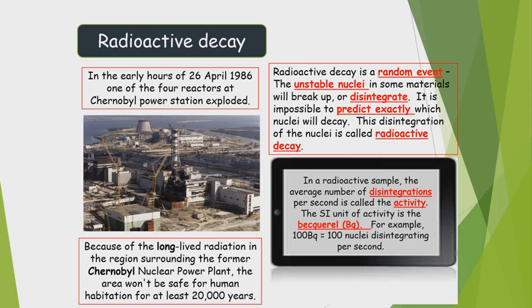Radioactivity is the ability of an atom to emit certain types of radiation. Some elements have the ability to disintegrate and emit certain types of radiation — that property is called radioactivity or radioactive decay. It is measured in becquerels (Bq). For example, 100 Bq equals 100 nuclear disintegrations per second.